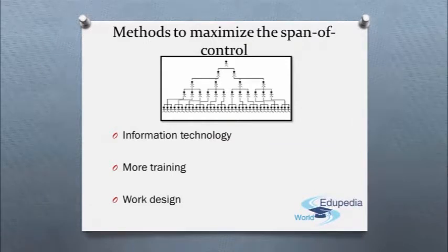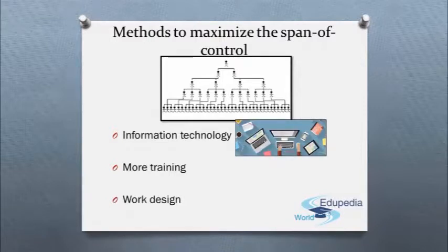Let's discuss the methods to maximize the span of control. Information technology. Use of efficient communication tools and other decision support systems can reduce the overall relationship complexity, thereby encouraging managers to supervise more subordinates.